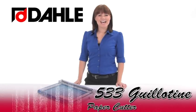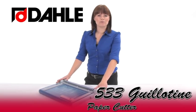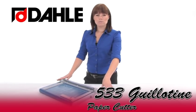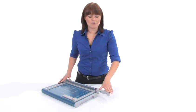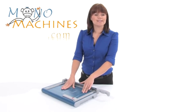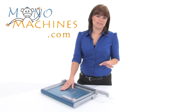Hi, I'm Holly with Mono Machines and this is the Dolly 533 cutter. It's got a 12-inch blade and lucky for you it's self-sharpening so you don't have to sharpen it yourself. It's also got a sturdy metal base that's not going to warp like the wood bases.